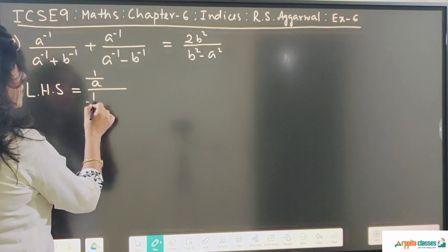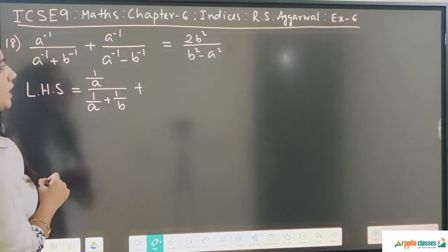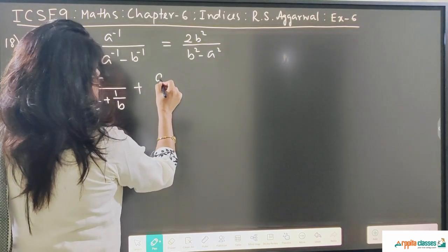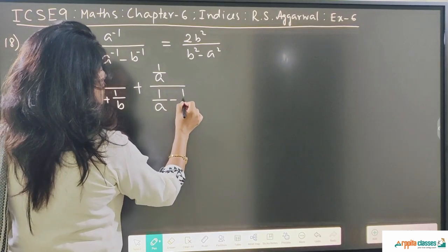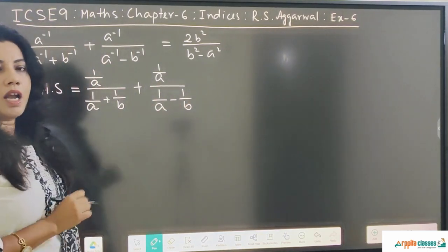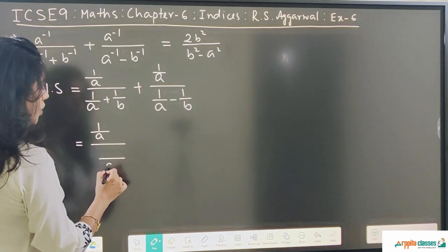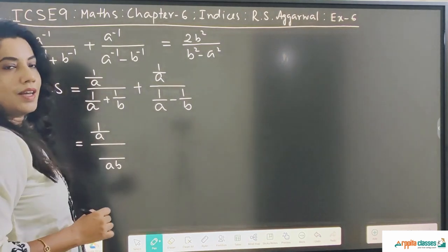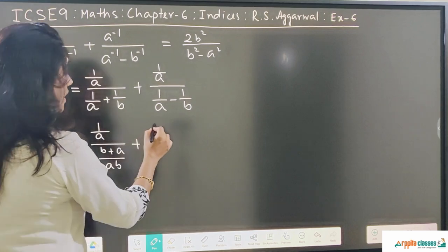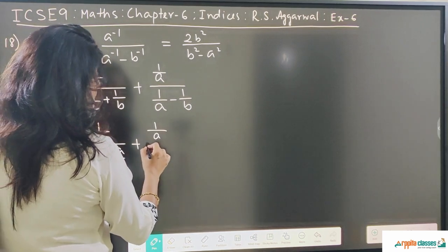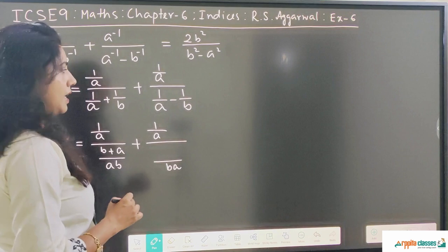The denominator a to the power minus 1 is 1 upon a plus 1 upon b, with a plus sign in between. Again a to the power minus 1 can be written as 1 upon a, divided by 1 upon a minus 1 upon b. We will keep the numerator as it is and take LCM at the denominator, which is ab. So here we get b plus a with a plus sign in between. Again the numerator is same; take LCM. The denominator becomes ab.